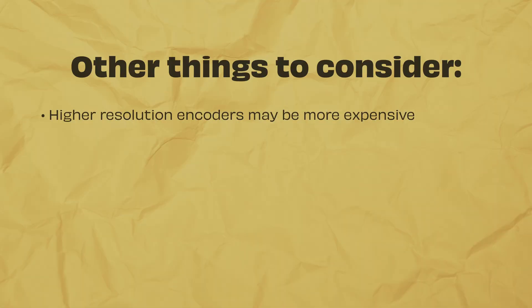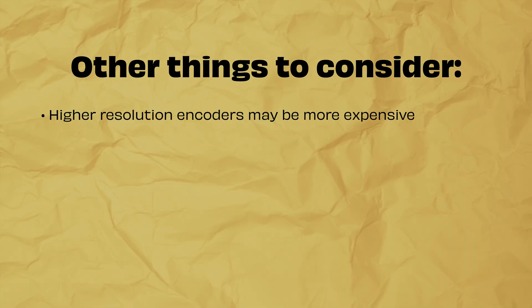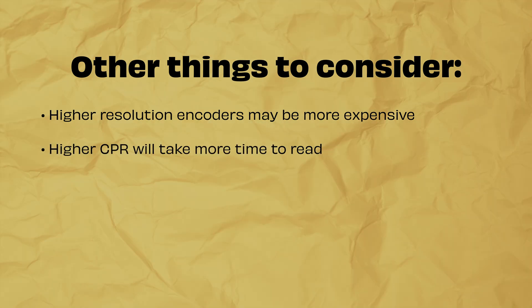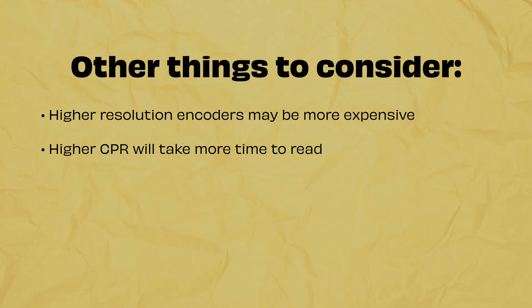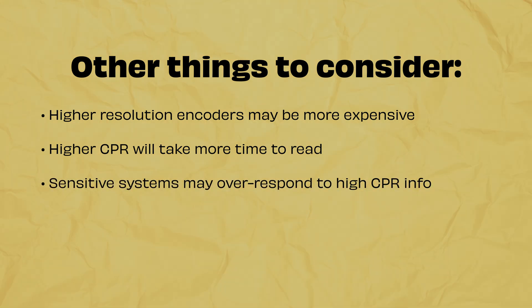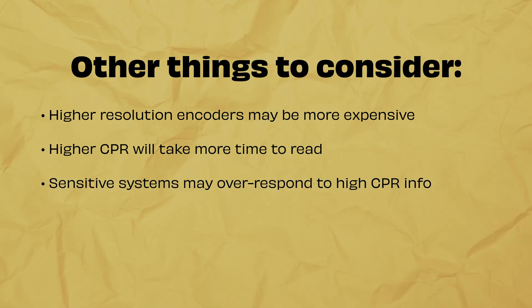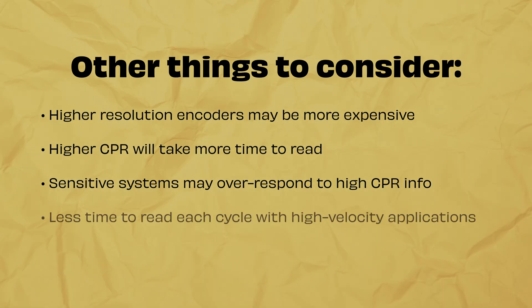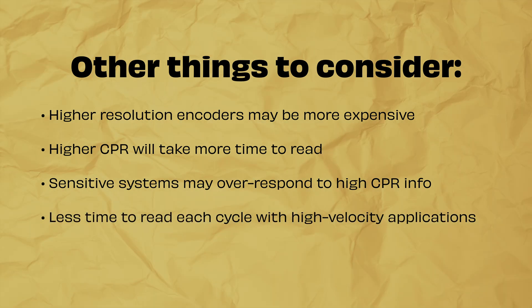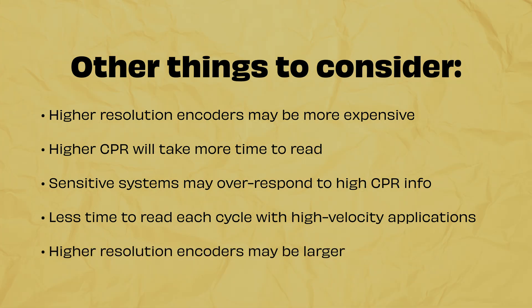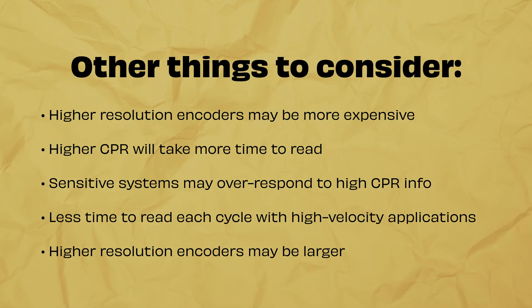There are a few more things you may want to consider. Higher resolution encoders may be more expensive. It takes time to read each cycle, so higher CPR will take more time. Sensitive systems may over-respond to high-CPR information, creating jitter. There is less time to read each cycle with high-velocity applications. Higher resolutions may also be larger than smaller resolution counterparts.